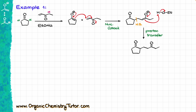Next, I look at my enolizable positions and determine which one can give me the best intramolecular aldol condensation. In this case, I have a pink alpha position, a green alpha position, a blue alpha position, and an orange alpha position. The pink alpha position gives a very awkward reach over the molecule — not a good choice. The green alpha position, if interacting with the carbonyl, gives a four-membered ring — not a good idea. The blue alpha position also gives me a four-membered ring. So finally, my orange alpha position, when reacting with my carbonyl, gives me a six-membered ring. That is the alpha position I am going to enolize.